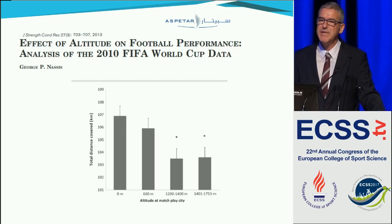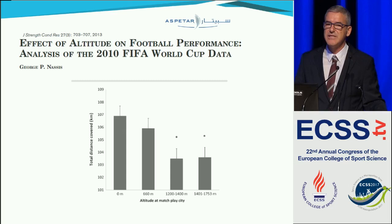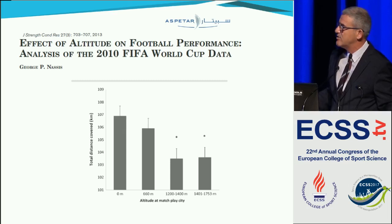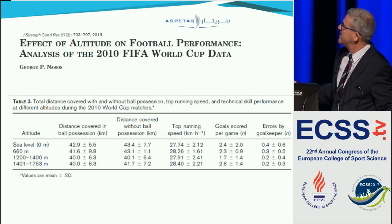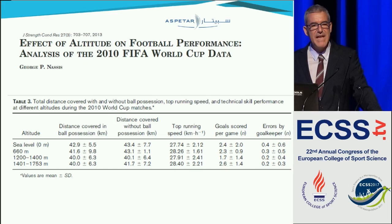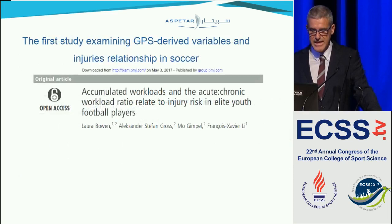In the 2010 World Cup, players experienced the effect of altitude on performance. Total distance covered was lower in high-altitude matches, but top running speed was not affected, and goals scored per game was not different between different altitude conditions — again suggesting that players regulate their pace to preserve key performance indicators.